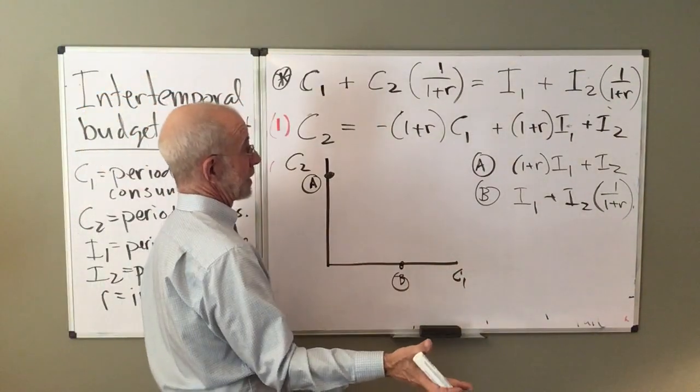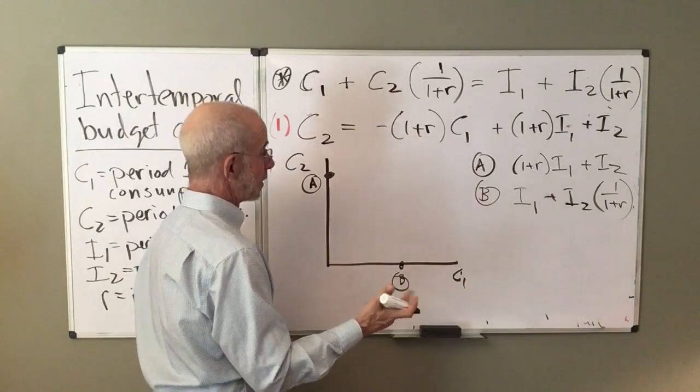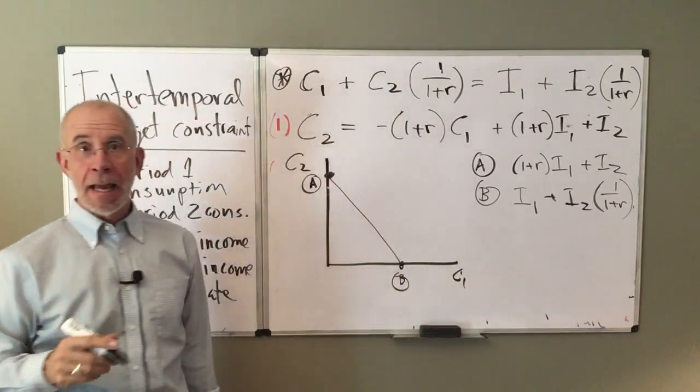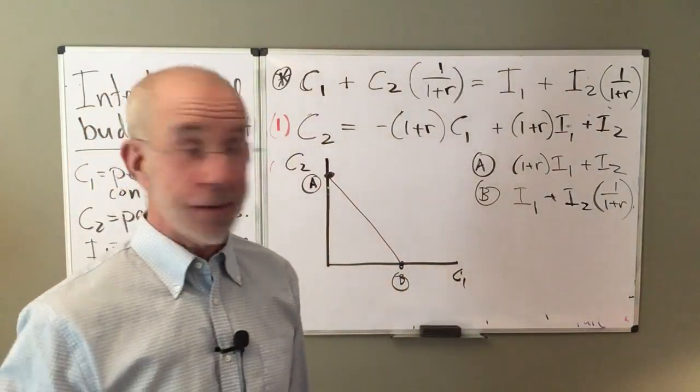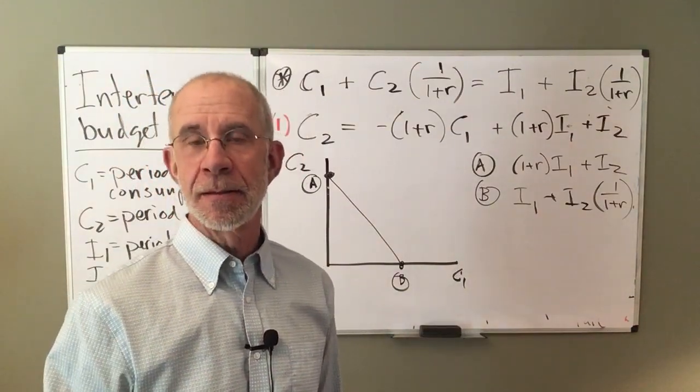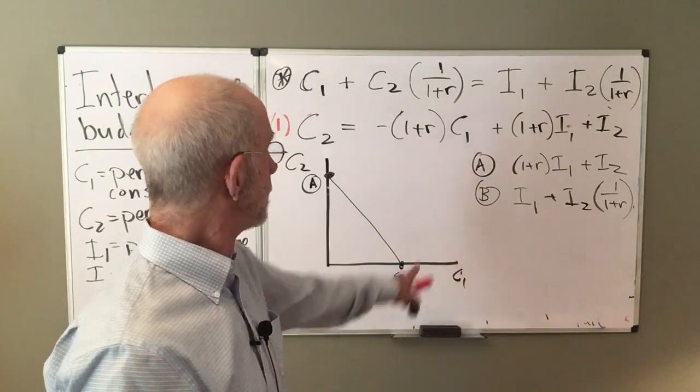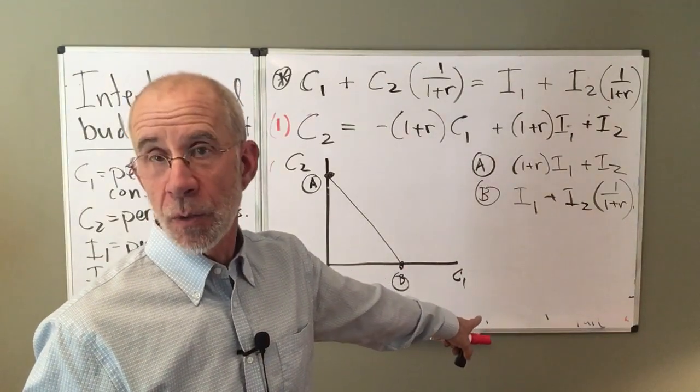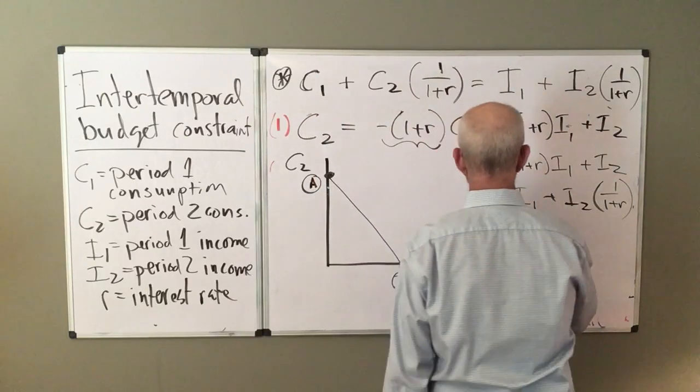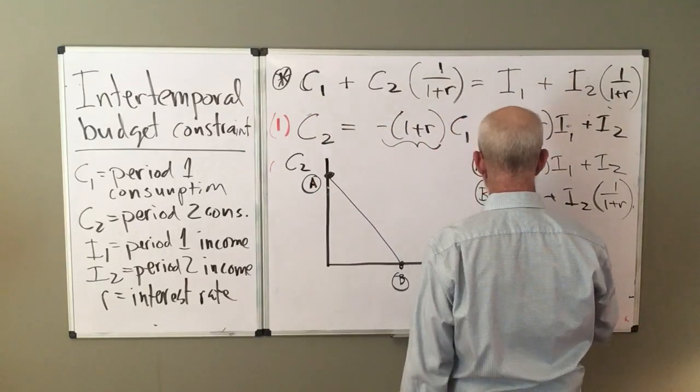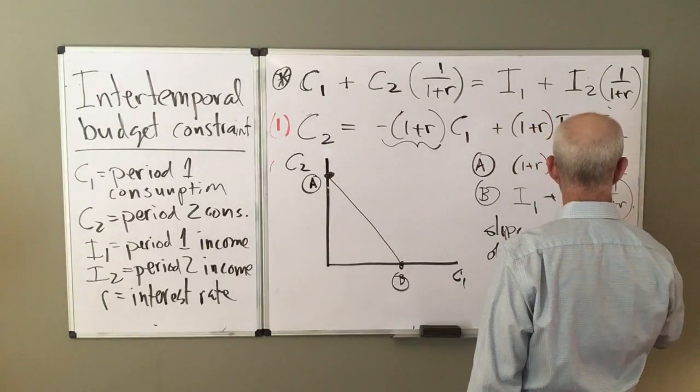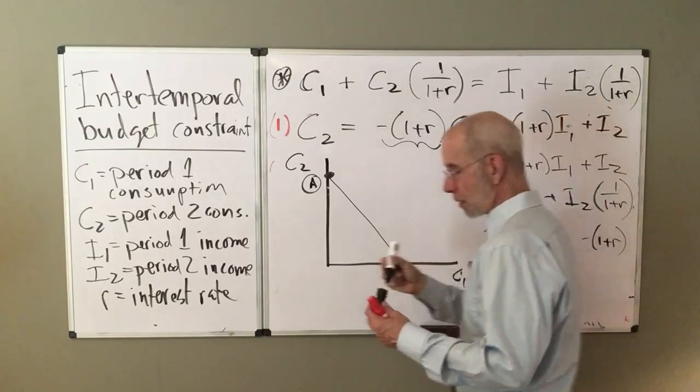Now, what is the, so I'm going to connect these dots and I've got a budget constraint. Now the question is, what's the slope of that line? What is the relative price of C, period one consumption? It's going to be this. The slope of this intertemporal budget constraint is minus one plus R.